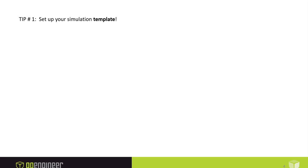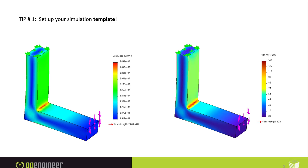Tip number one is to set up your simulation template. If you haven't already done this, please do it. It'll save you the headache of having to constantly read scientific notation from your charts. This is the factory default set of settings on the left, and on the right you can see I've already customized my simulation template so that all my charts show up nice and clean.